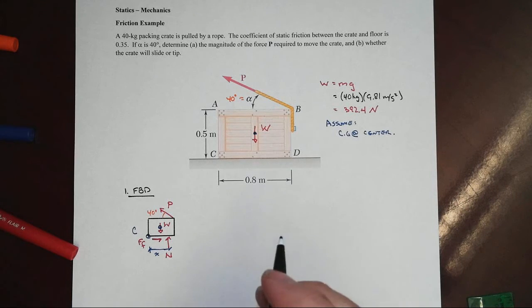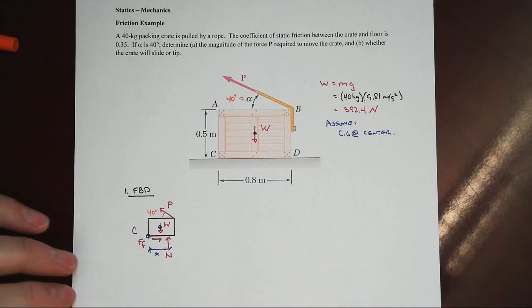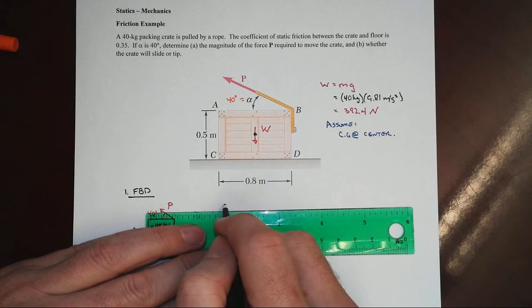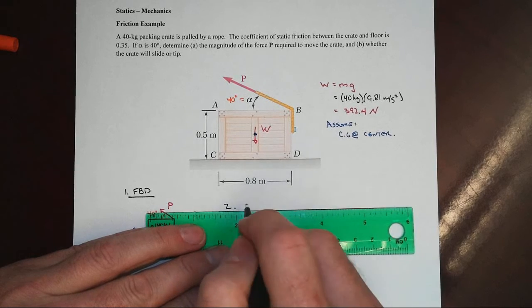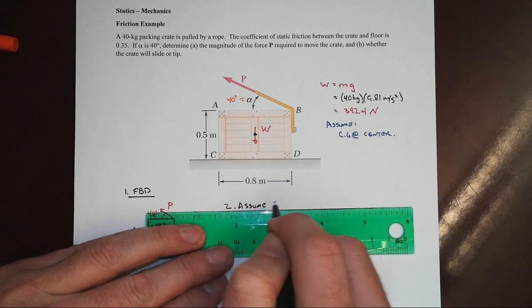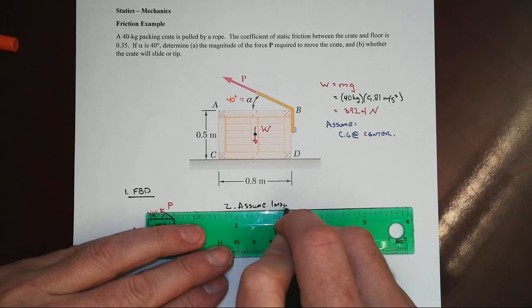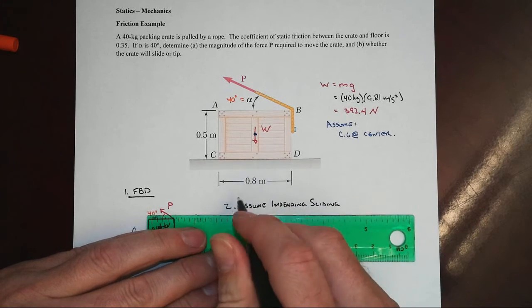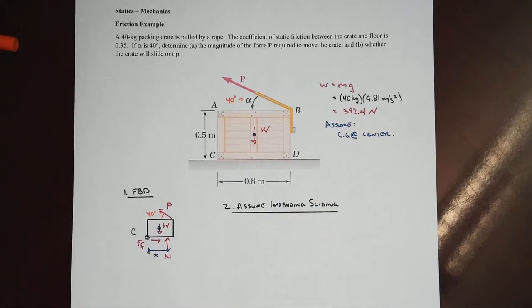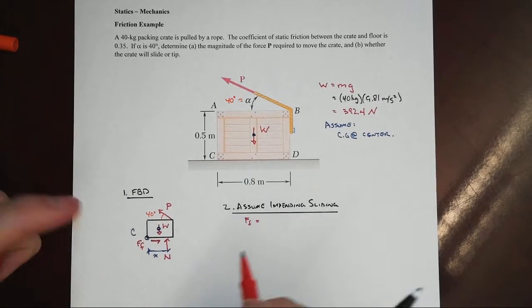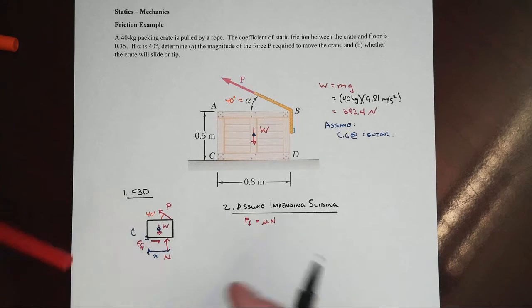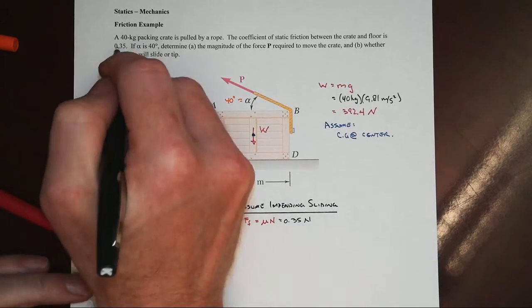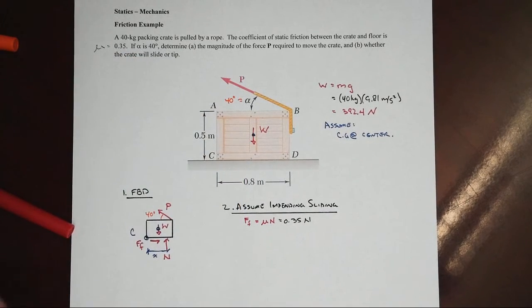In friction problems, we usually have to start making some assumptions here. We're trying to get this thing at the impending motion. So to preserve space here, I'm going to move to the right instead of straight down, but we will assume that we have impending sliding. And that will tell us then a couple of things. One, that F sub f then would be equal to mu times n, a normal force, not mu times n. Might be 0.35 here. And that's what we've been given in the problem statement.